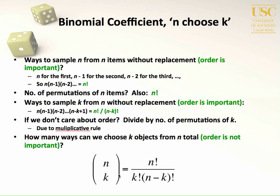N choose k — that is, n above k in parentheses — is a useful combinatorial expression that describes how many ways you can choose k objects from n total objects, where we don't care about the order of those k objects. For example, if n includes all the letters in the alphabet and k is a sample of those letters — say we choose a, b, and c — then the sample a, b, c is the same as c, b, a, or a, c, b. We don't distinguish between different orderings, and that's what n choose k allows us to estimate.